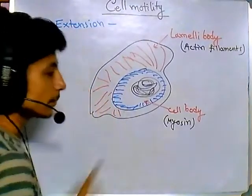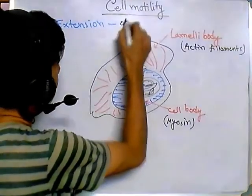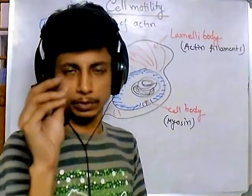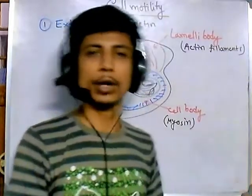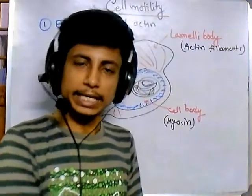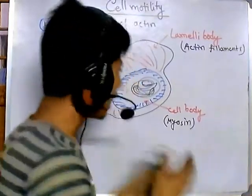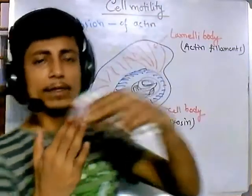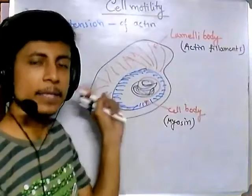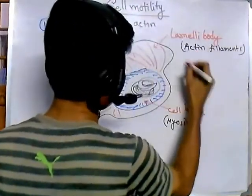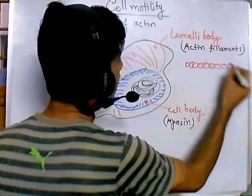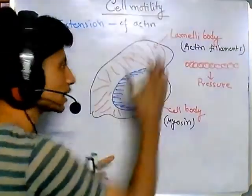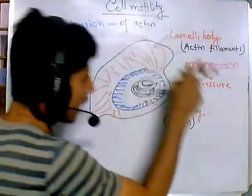The first stage of movement is extension — specifically, extension of the actin filaments. Actin are small protein molecules added one after another in a process called actin polymerization. Due to polymerization, actin starts to build up a large network, creating pressure on the outer cell membrane. As actin polymerizes, it pushes the membrane outward. This pressure on the cell membrane causes it to extend, so extension is driven by actin proteins.